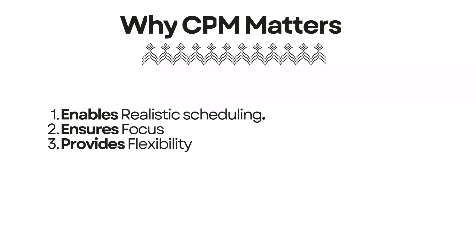So why does the critical path method matter? Understanding your project's critical path gives you three major advantages. Firstly, it enables realistic scheduling — the critical path tells you the minimum time needed to complete your project based on the sequence of activities. Secondly, it ensures focus, so instead of treating all activities as equally important, you can concentrate your attention and resources on critical path activities. And lastly, it does provide flexibility. For activities not on the critical path, you have wiggle room — this lets you shift resources or delay non-critical activities when necessary without compromising your deadline.